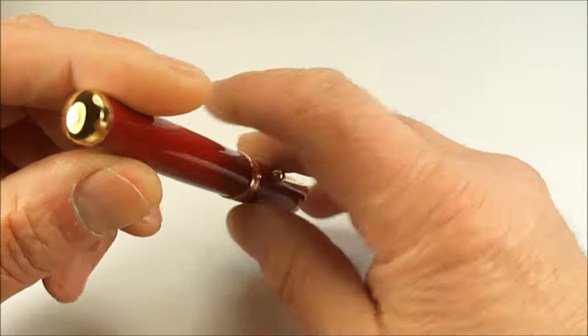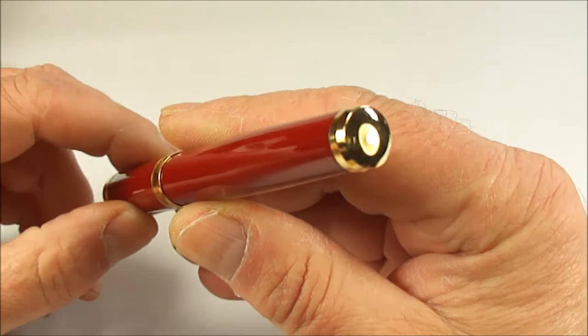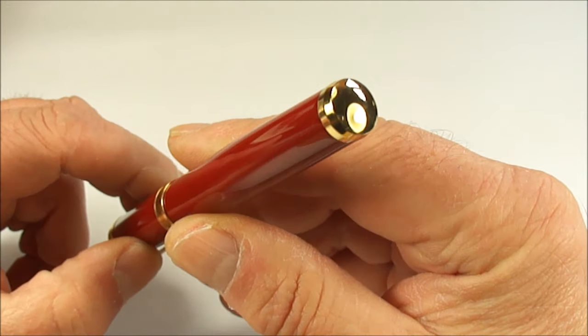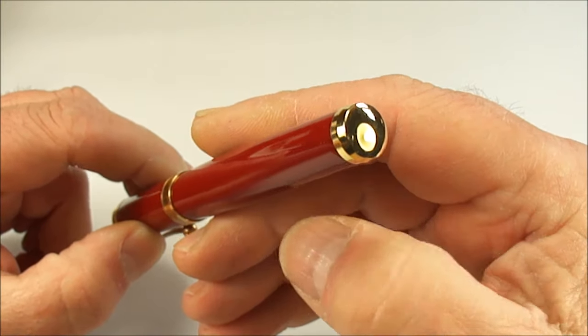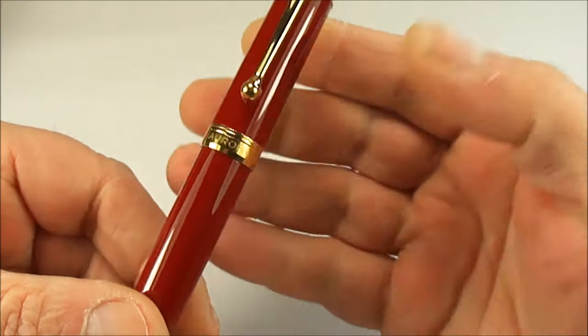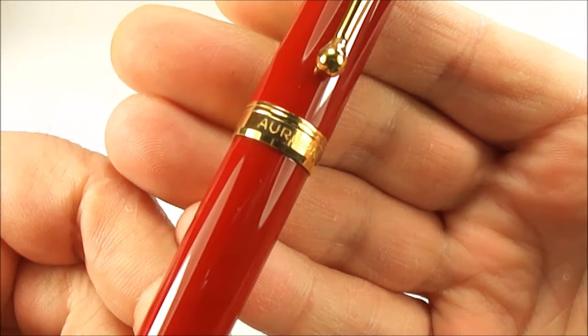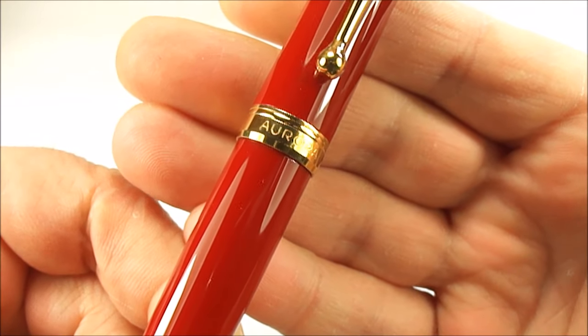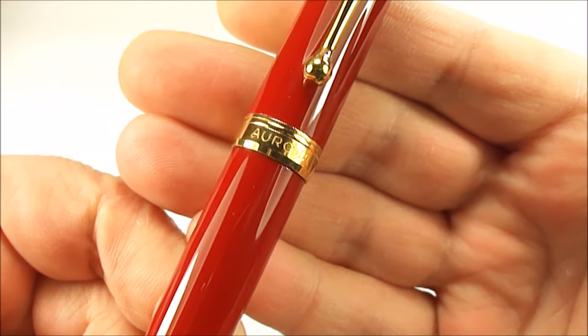Let's show you the trim. First of all to the very end of the barrel, you can see it's got this gold filled highly polished sort of cap end to the end of the barrel. If we take you to the cap band there, you can see it's got a lovely quite a large cap band and you can see there with the manufacturer's name Aurora.